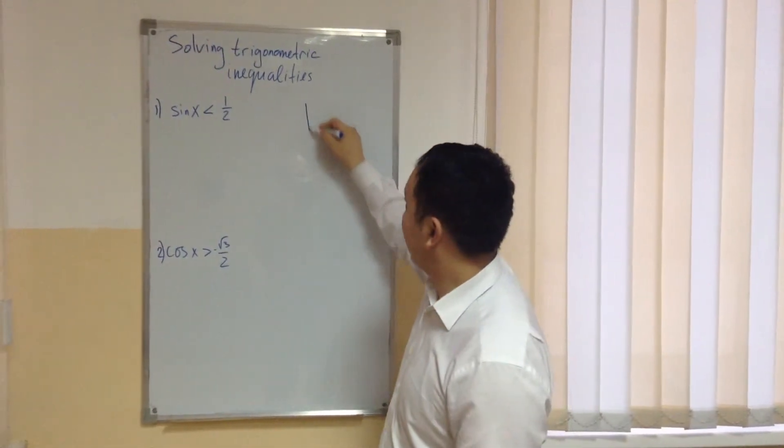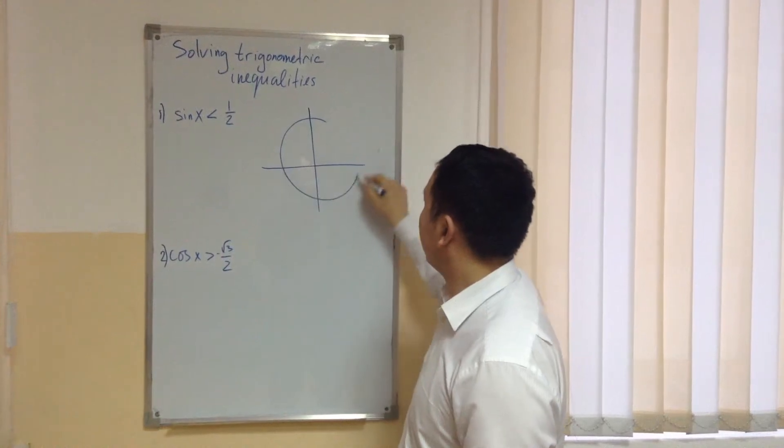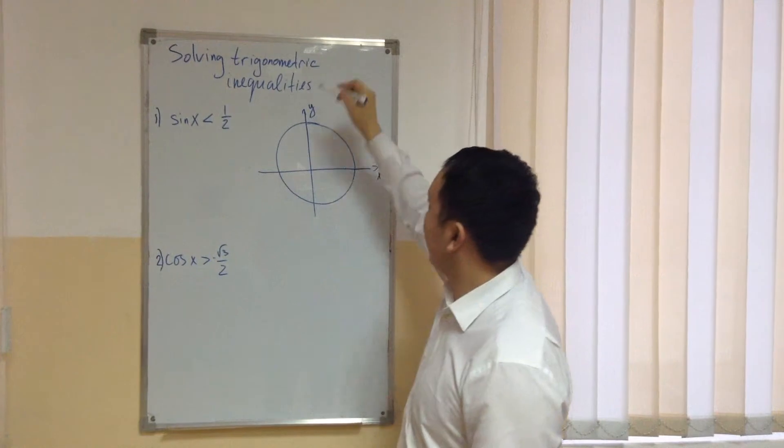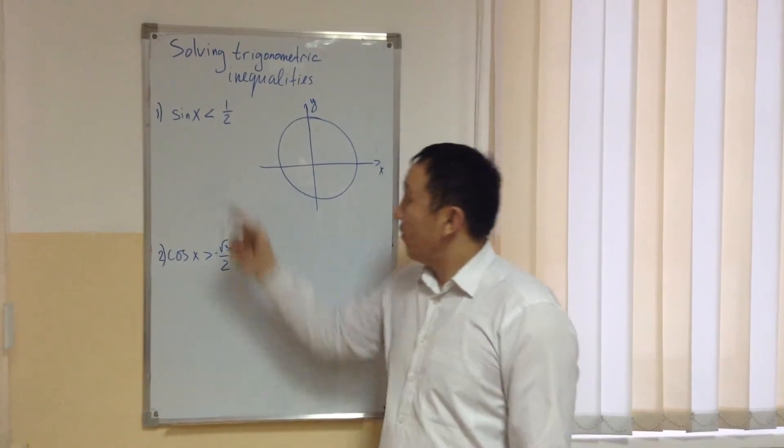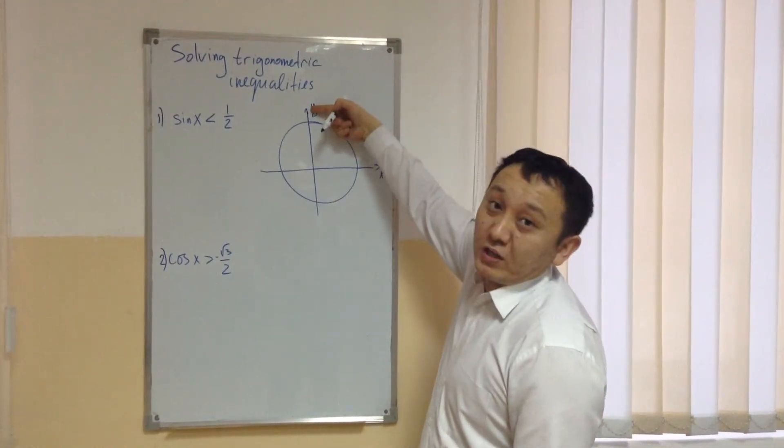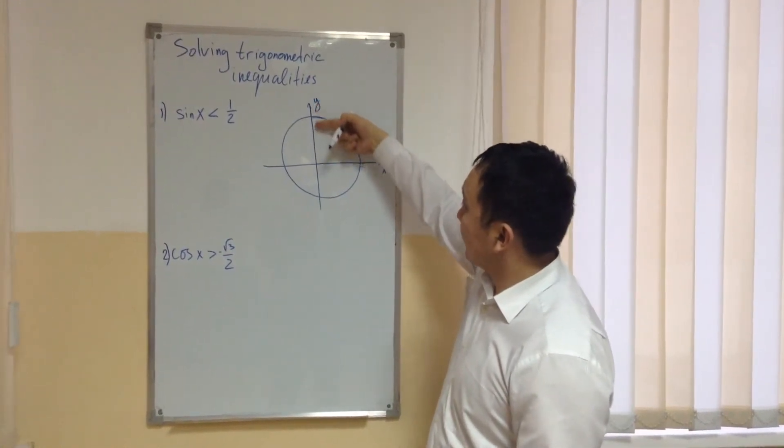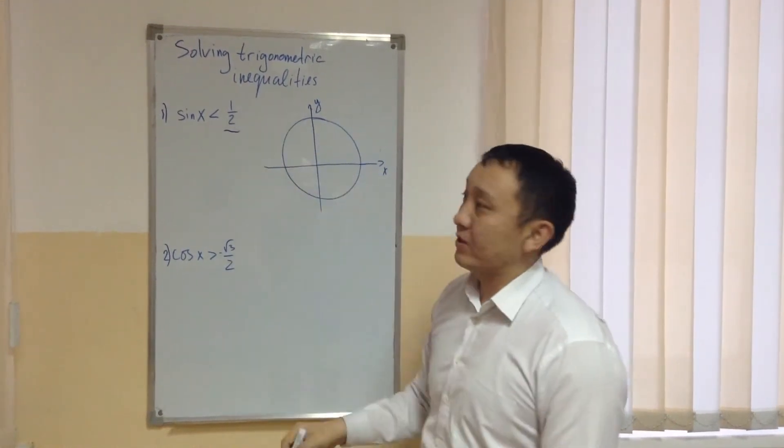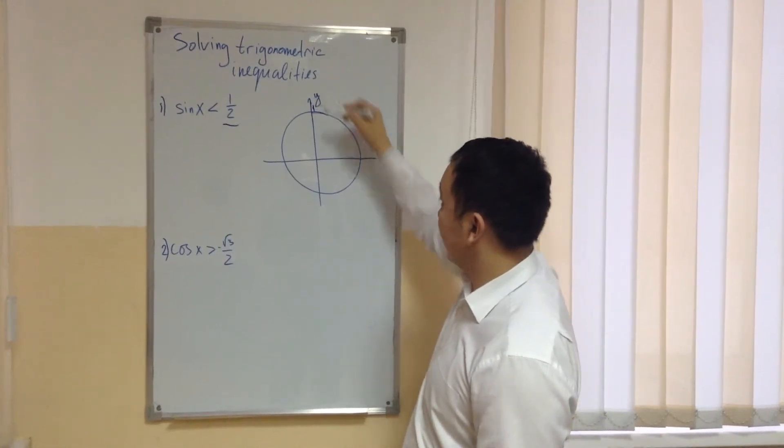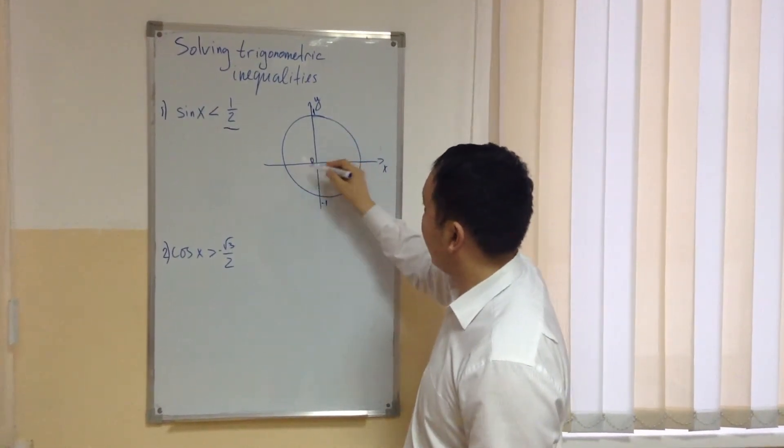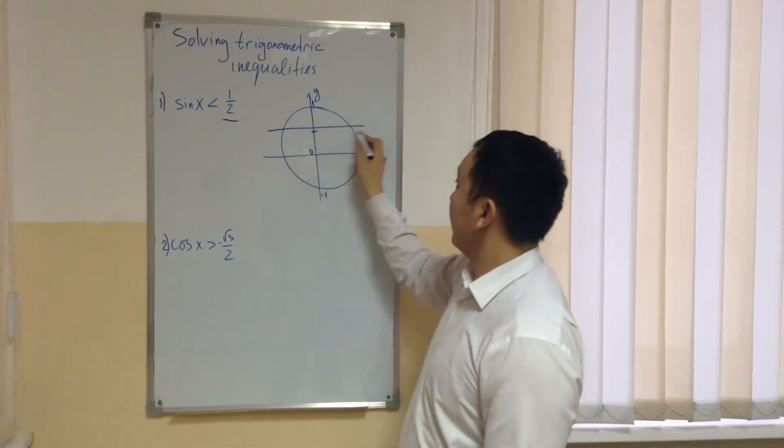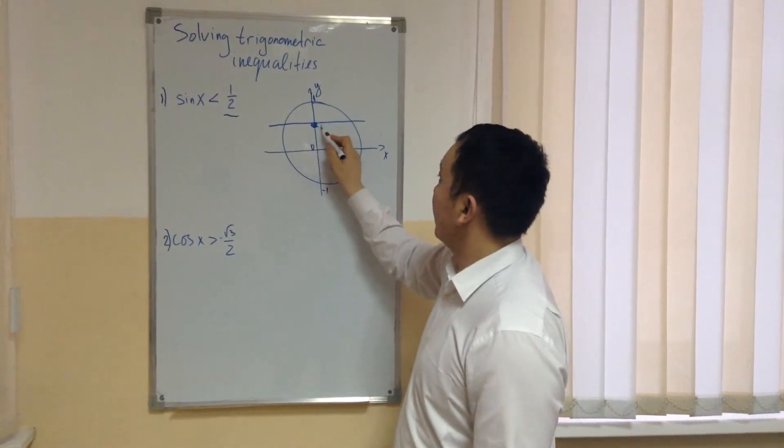First of all we have to draw a unit circle. This is my x axis and this one is y axis. Now for sin we always have to take the main axis as the y axis. This one is related to sin, so in this axis I have to choose this number sin x less than 1 over 2. So I have to draw a parallel line passing through this, so it is 1 over 2.